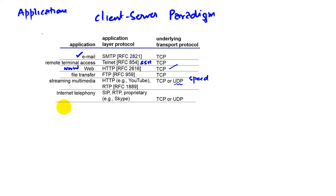The same thing is true with internet telephony. Whether we're using something like Skype or some chat version — audio chat — it can use both TCP or UDP. So what does the client-server paradigm really involve?